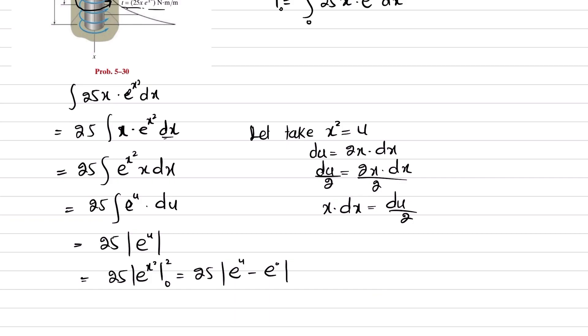One more thing is x dx equals du divided by 2, so we have 2 as well here. e^(x²) divided by 2 will be this divided by 2. That will be equal to 25 times (e⁴ - 1) divided by 2.